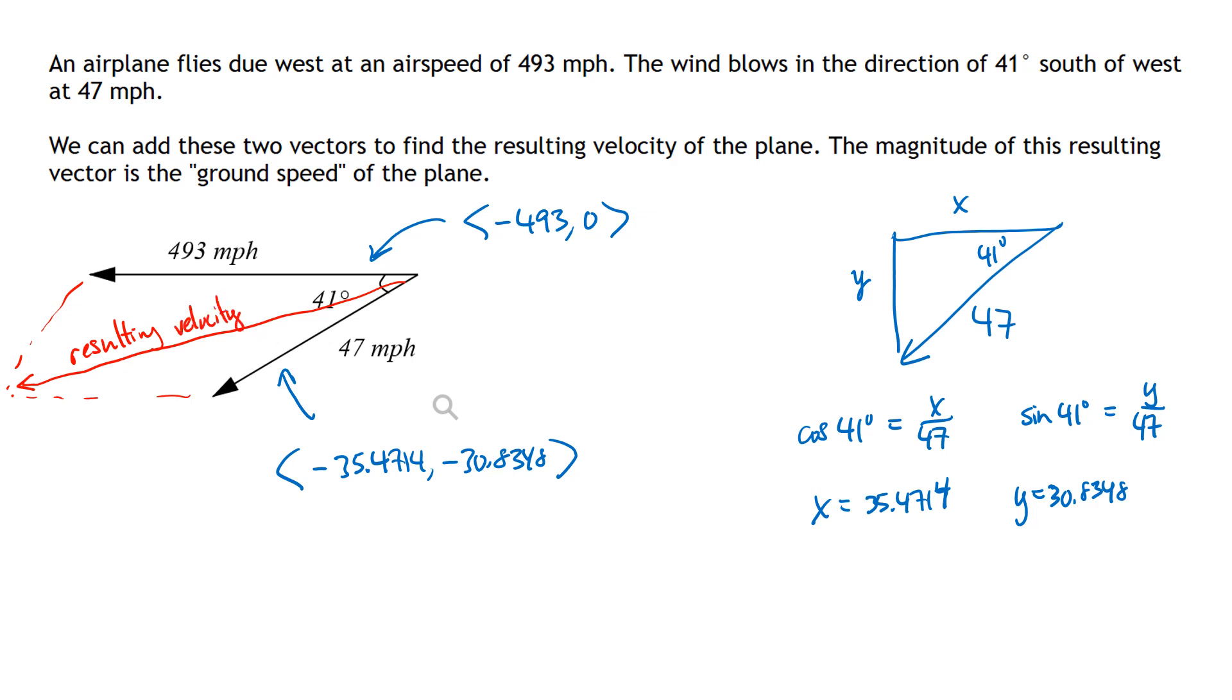And what that is, is just the sum of these two vectors. I'm going to add these two vectors together. And so my resulting velocity V is going to be the vector negative 528.4714, comma negative 30.8348.